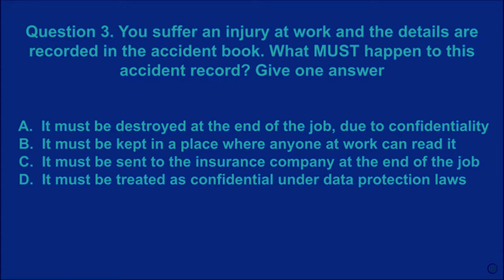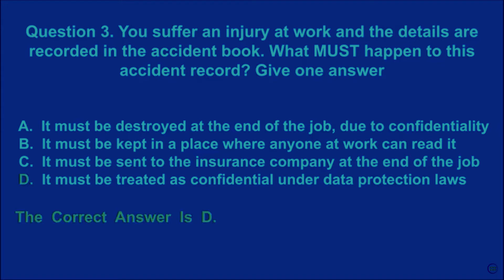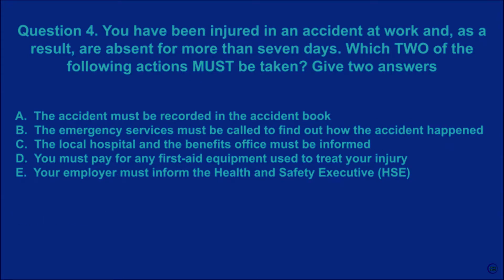Question 3: You suffer an injury at work and the details are recorded in the accident book. What must happen to this accident record? Give one answer. A: it must be destroyed at the end of the job due to confidentiality. B: it must be kept in a place where anyone at work can read it. C: it must be sent to the insurance company at the end of the job. D: it must be treated as confidential under data protection laws. The correct answer is D.